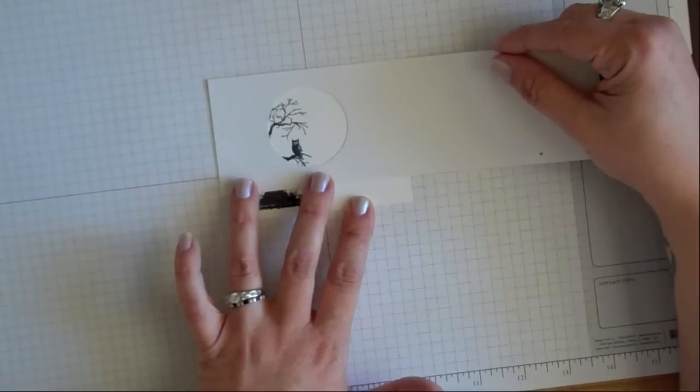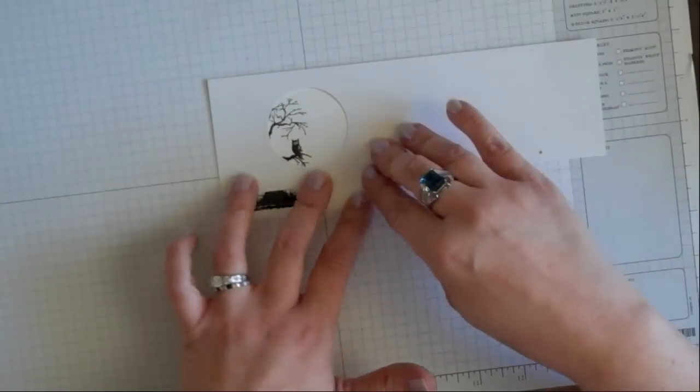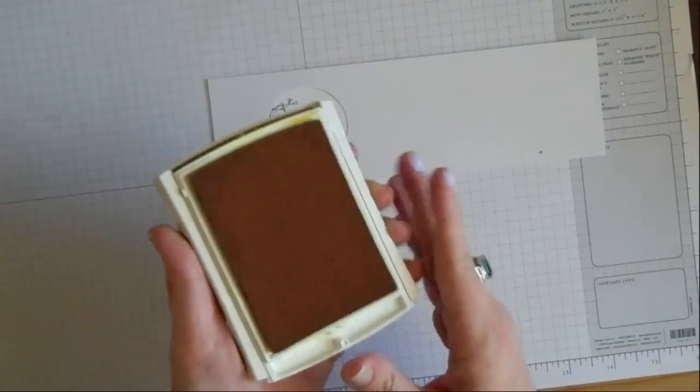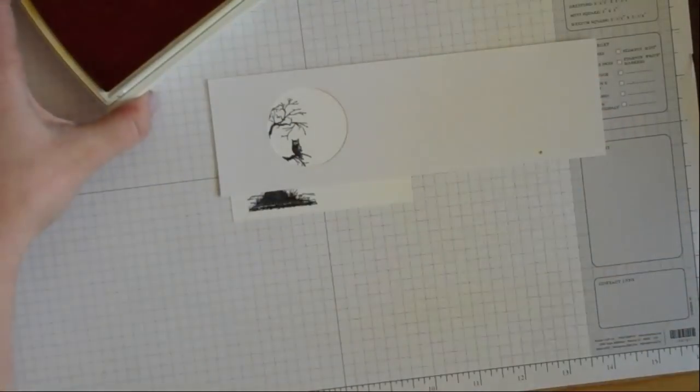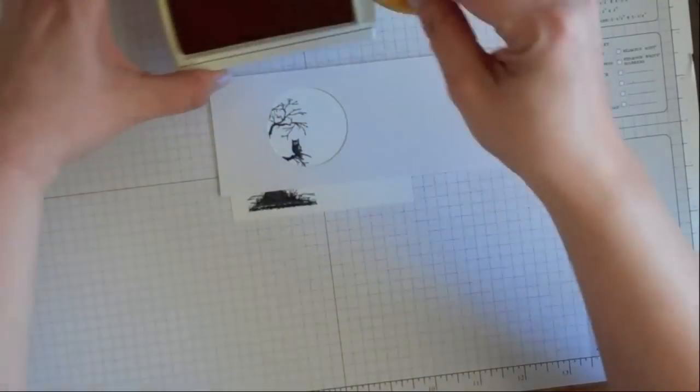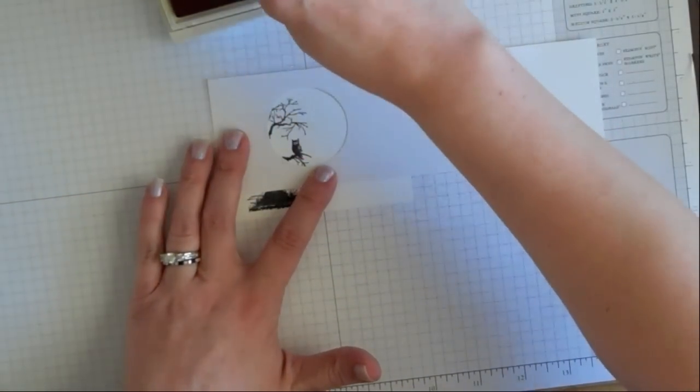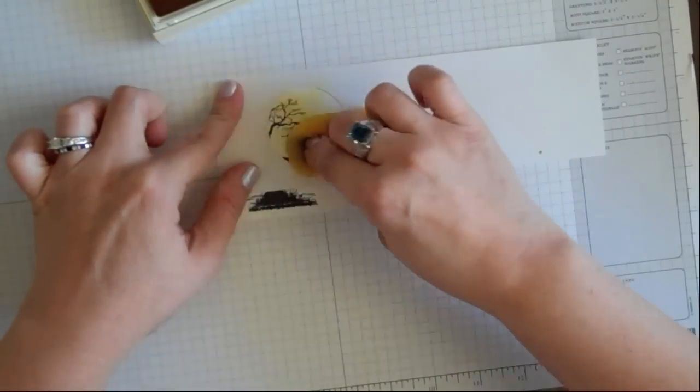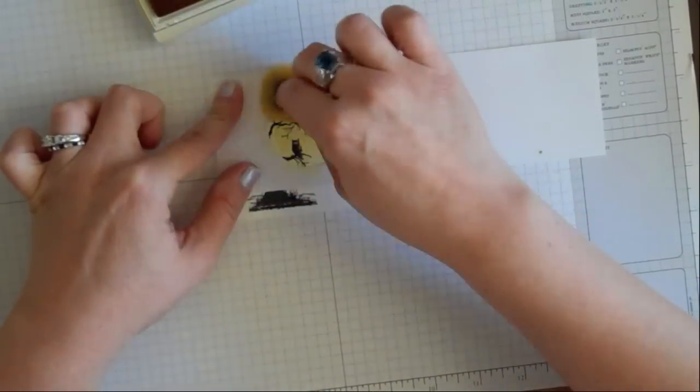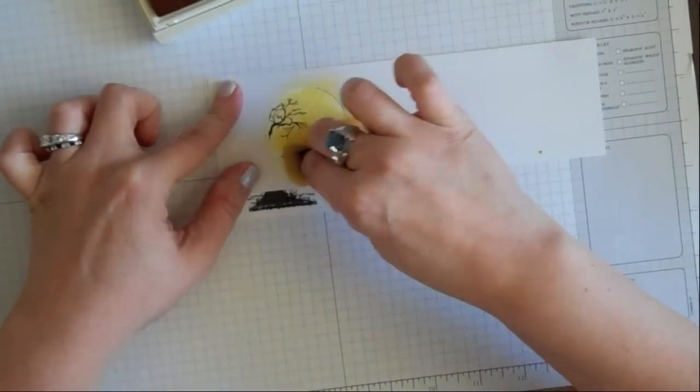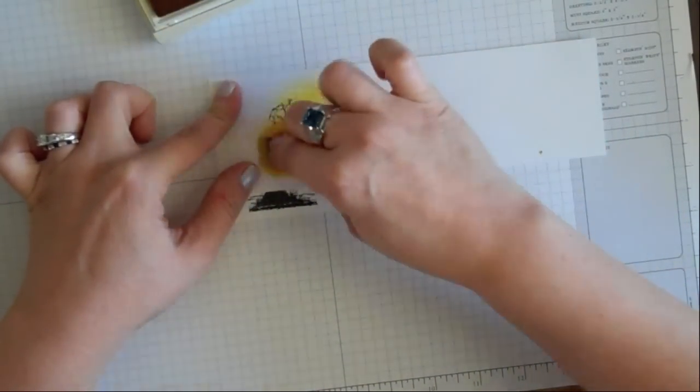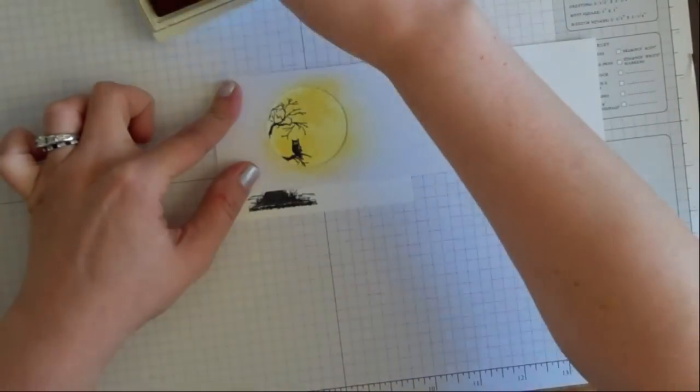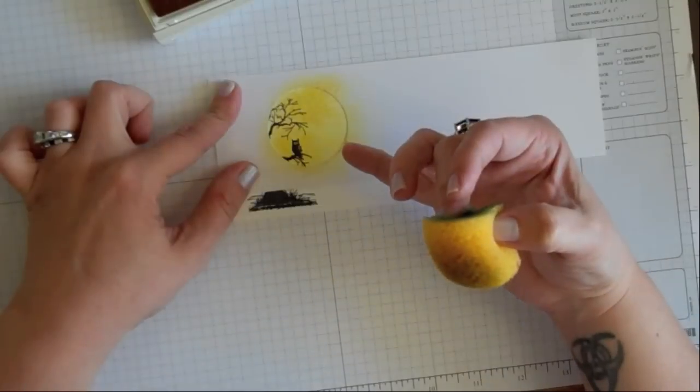I'm going to sponge a circle behind the owl and the tree to make it look like a moon. I'm going to use the new core color Daffodil Delight with a little wedge of sponge. You're going to ink up your sponge and then hold your mask in place and sponge around. You could use a stippling brush as well or color in with pretty much any medium. I like to use a sponge because you can control how deep your color is.